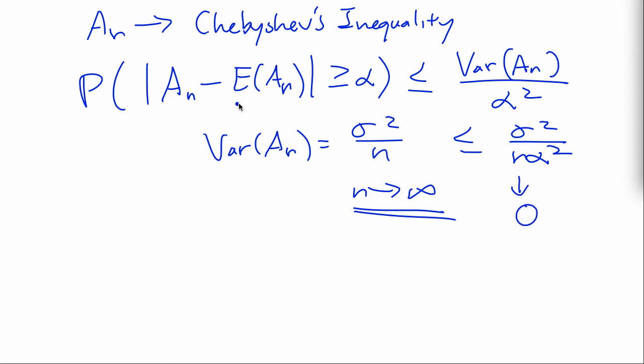this probability that these variables will deviate from the mean will go to zero. Which means essentially that An converges to the mean with probability. And this is the weak law of large numbers.